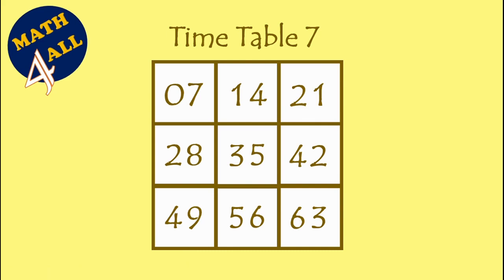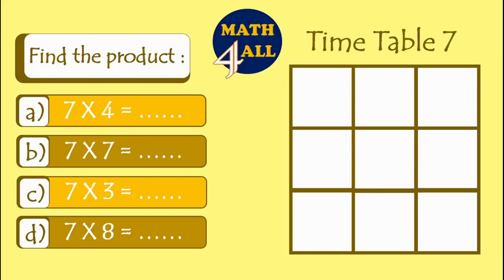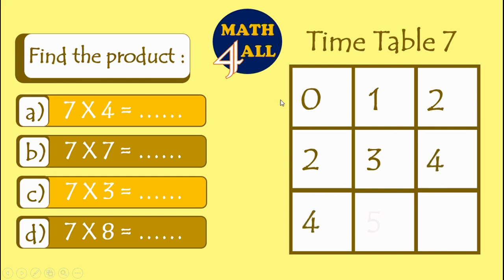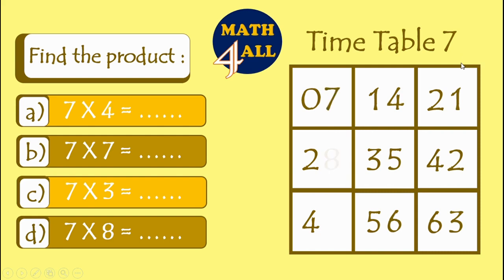Now we will use this table to solve table 7. To fill this table, from the left side I will write 0, 1, 2, 2, 3, 4, 4, 5, 6. And from the top, starting from 1: 1, 2, 3, 4, 5, 6, 7, 8, 9. Now this is the pattern of 7.